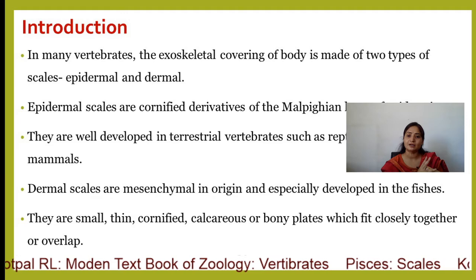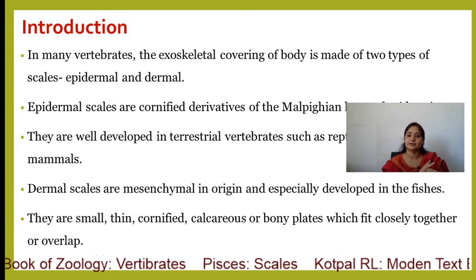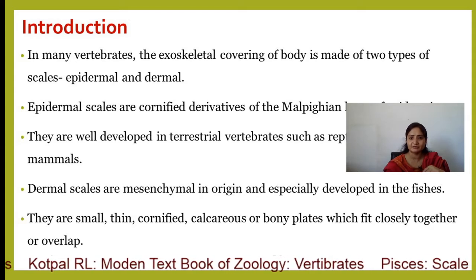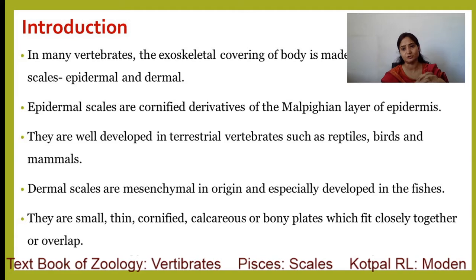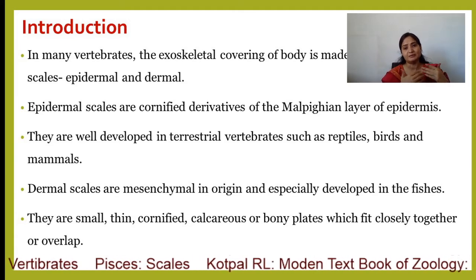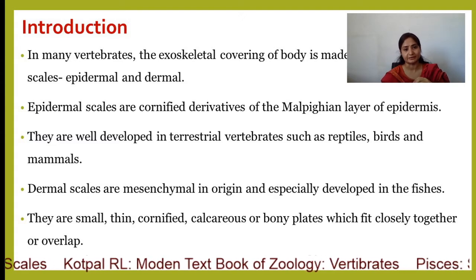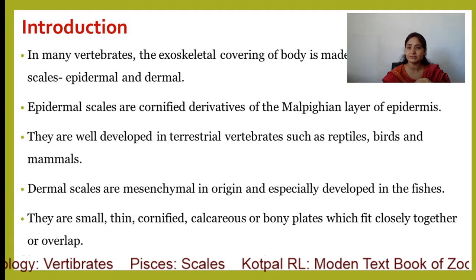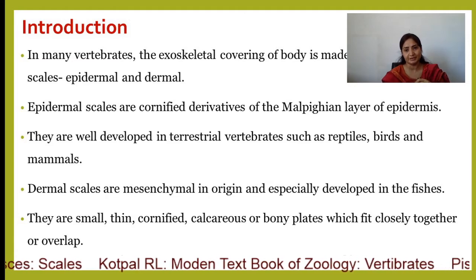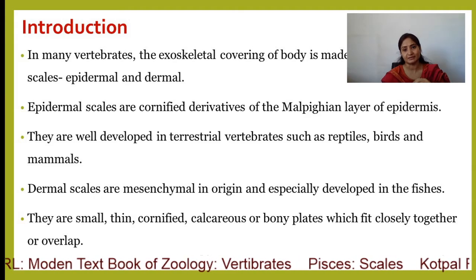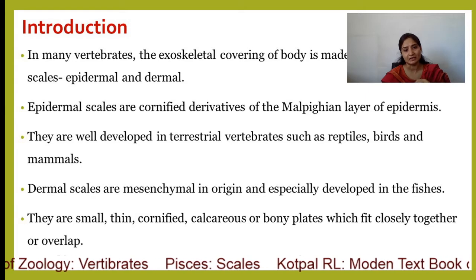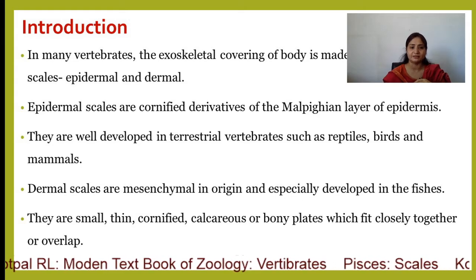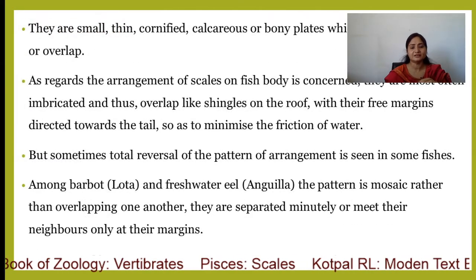There are two types of scales present: Epidermal Scales and Dermal Scales. Epidermal Scales are basically the Malpighian layer. We know that the epidermis has six layers, and the lower layer is the Malpighian layer — that Malpighian layer we call Epidermal Scales. These are characteristic features of terrestrial vertebrates that include reptiles, birds, and mammals. Dermal Scales, which we are talking about in fishes, are basically dermal in nature, mesenchymal in origin, and they are small, thin, cornified, calcareous, and bony plates which fit closely together and overlap.